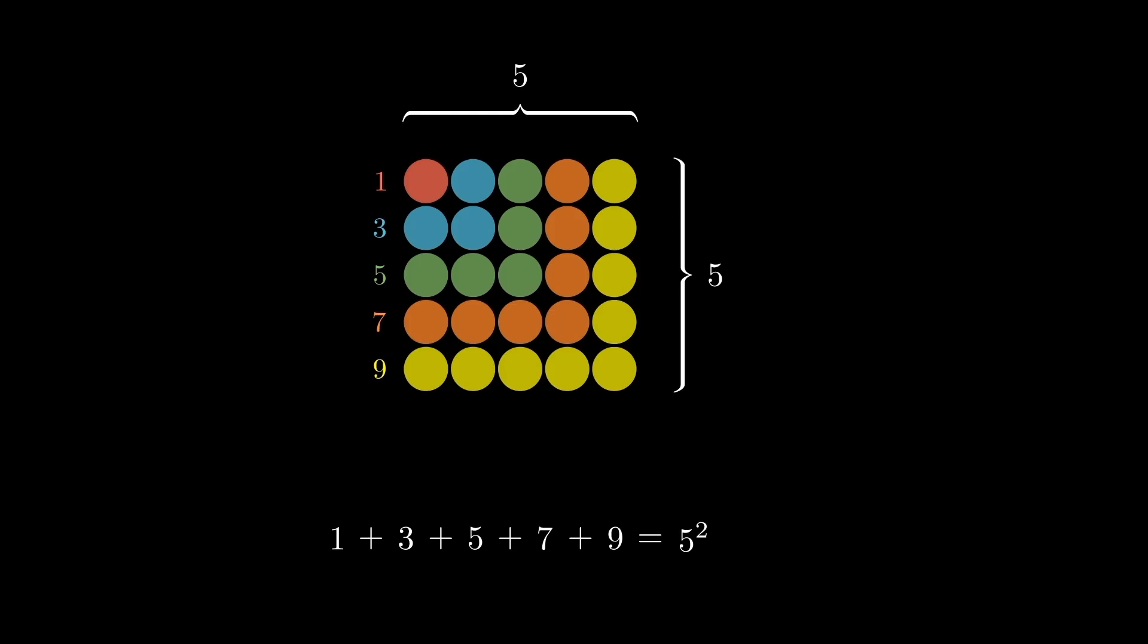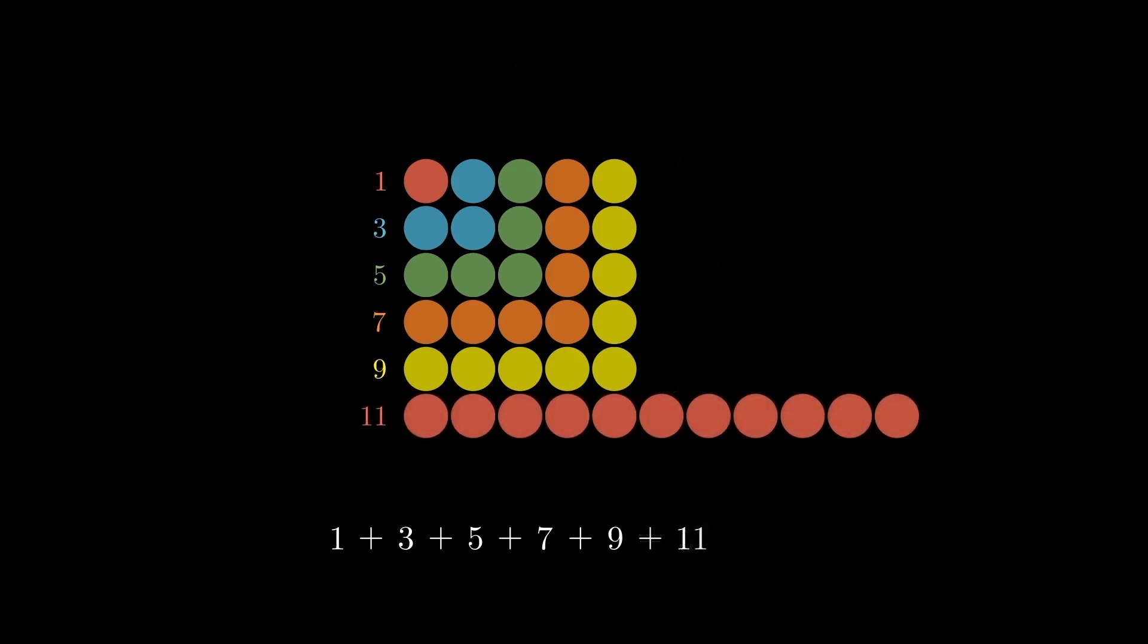If we add the next odd number, that is another row of dots, this row can be bent again to form a bigger square.